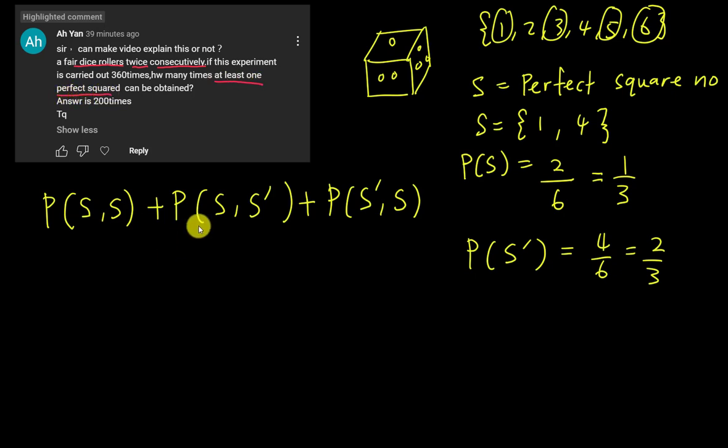So that means at least one, right? Means I can get one perfect square number or two perfect square numbers. So you can see here, I'm actually getting one perfect square. Here I'm also getting one. Here I get two. Can I include none of them? No, because the question says at least one perfect square. So therefore, this is all the options I have. Alright, then only I will do the carry out 360 times after I find the answer.